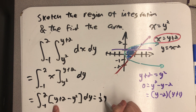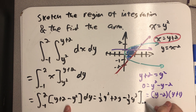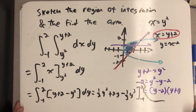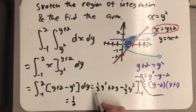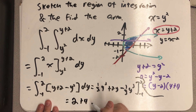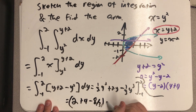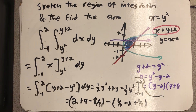Now I just need to find an antiderivative with respect to y. I have one half y squared plus 2y minus one third y cubed, evaluated from minus 1 to 2. So now I compute: one half times 2 squared is 2, plus 4, minus 8 over 3, minus one half, minus 2, plus one third. I'll do that arithmetic on my TI-84.